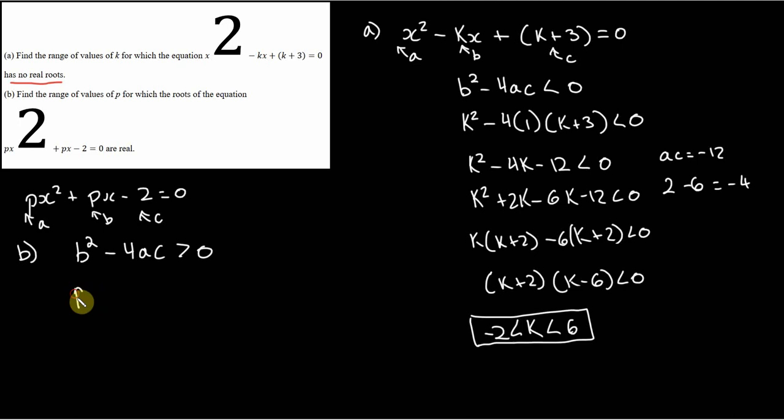So b squared is just going to be p squared minus 4 times a is just p. And c is negative 2. And so we end up with p squared. That's a 2 plus 8p. And of course that is greater than 0, greater than 0.